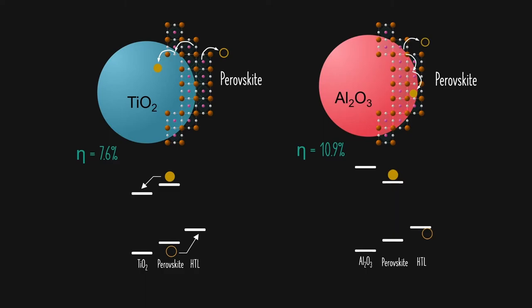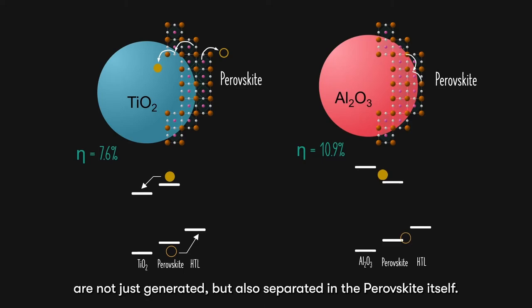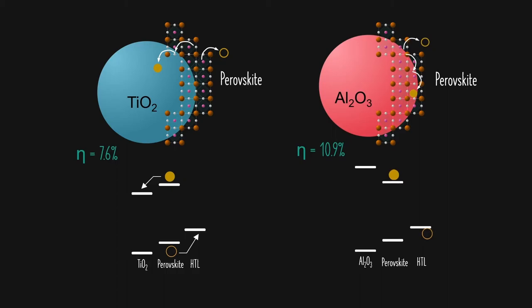Now, this can only mean one thing. The team suspected that the electron and hole pairs are not just generated, but also separated in the perovskite itself. The perovskite does not act as a p-type or n-type material, but rather an intrinsic material. Perovskite is itself both a good absorber and conductor. This exciting discovery started a whole new field of perovskite solar cells.